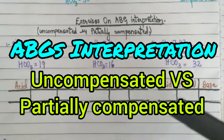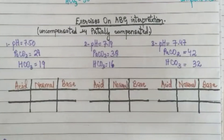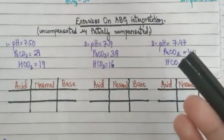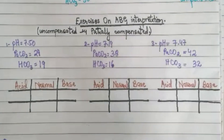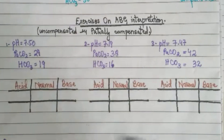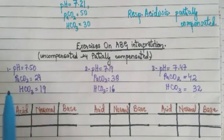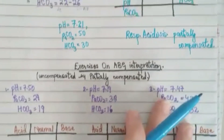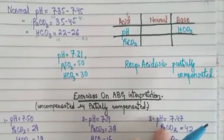Assalamu alaykum friends, welcome to our channel. In the previous video we discussed how to maintain the acid-base balance, how to maintain the pH, and how to maintain the blood. Now we will do some exercises for ABG interpretation. I want to explain the difference between uncompensated and partially compensated using different exercises, then we will look at compensated, because it is a bit confusing. First, the pH we have is 7.50, and we know these normal ranges.